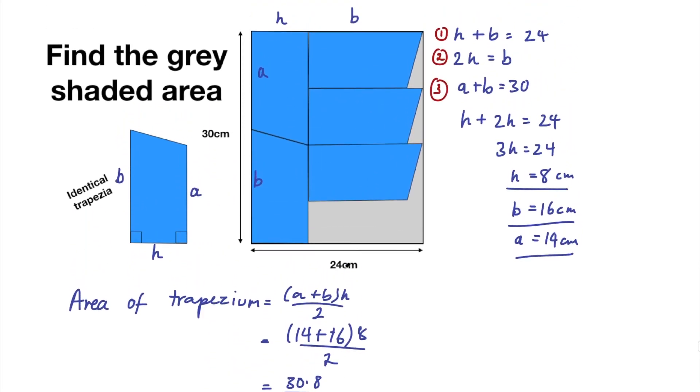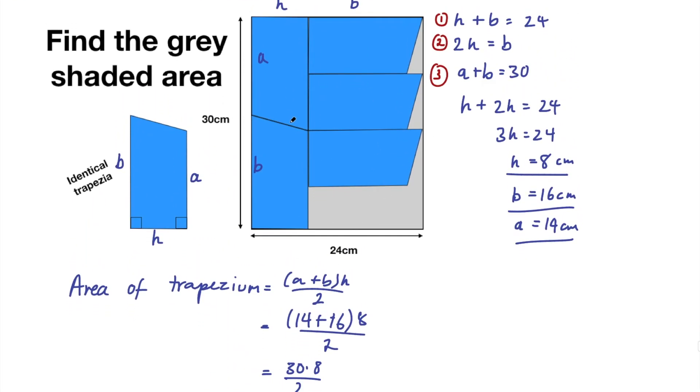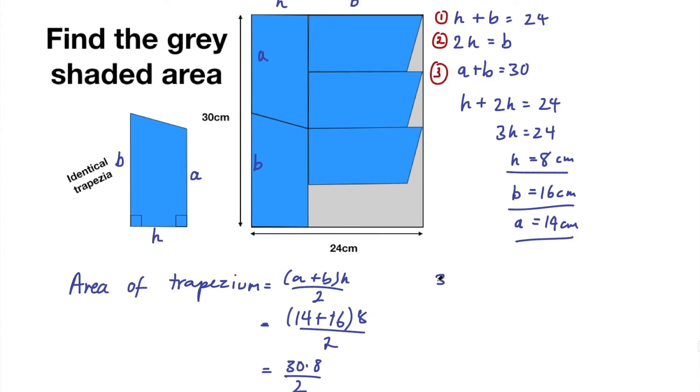And then now let's work out the area of the whole rectangle. That's going to be 30 times 24. That's like 3 times 24. That's 72. So that's going to be 720 centimeters squared.